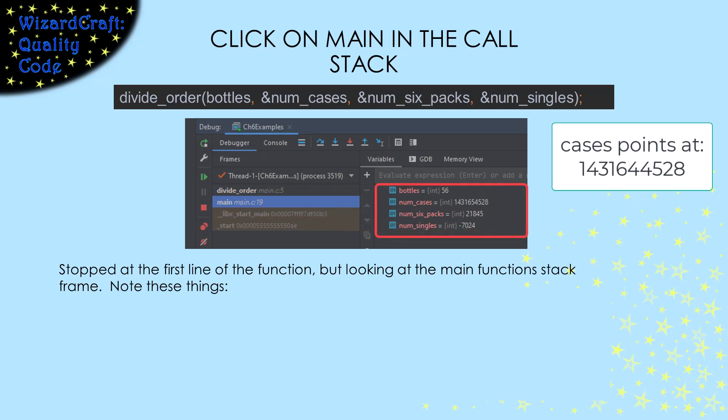You can still see that there's a stack frame above us for our function call. But now CLion is showing us main's local variables. In main, all of our variables are just integers. We haven't given them any values, so C is less than helpful and leaves the values that were whatever was laying around when they were declared. However, notice the value in num_cases. That's the value that the pointer in the function was pointing at. So when we passed the address of num_cases, our function got a pointer pointing at this integer in the stack frame.